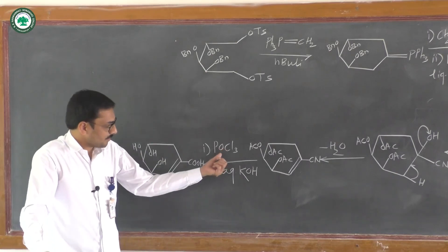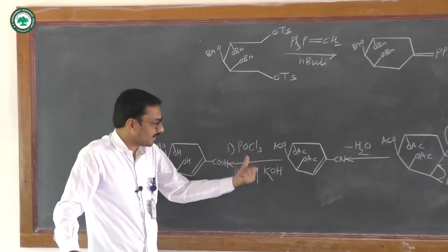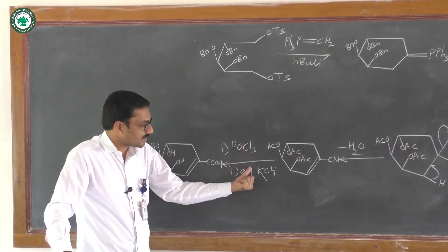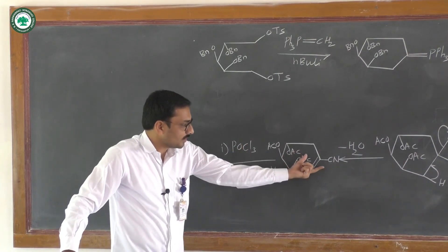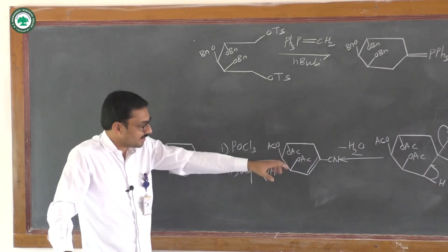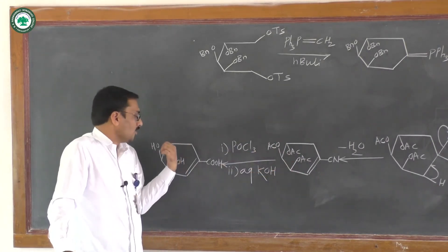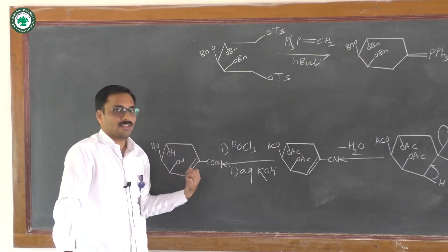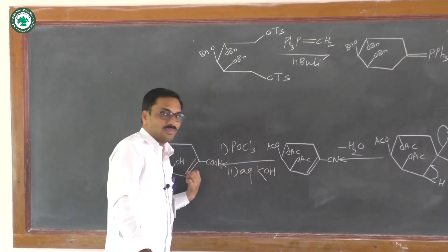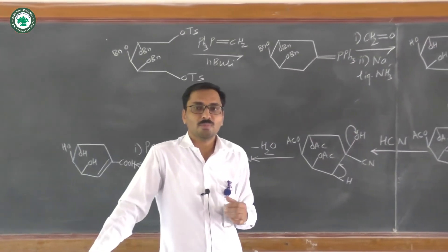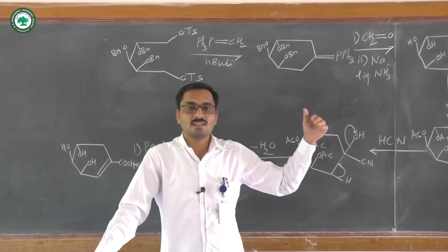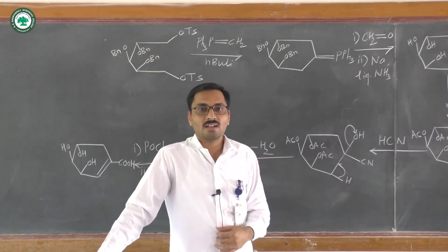In the last steps, we use POCl₃ and then aqueous potassium hydroxide. Under these reaction conditions, the cyano group undergoes conversion into a carboxylic acid, and the OAc groups are removed to give the corresponding hydroxyl groups. This is the structure of shikimic acid. In this way, we synthesize shikimic acid using D-arabinose as the starting precursor. In the next lecture, we will see the next part of the Chiron approach. Thank you.